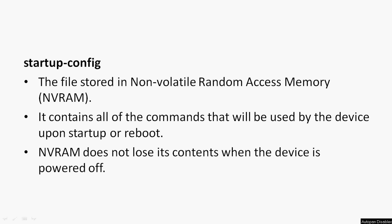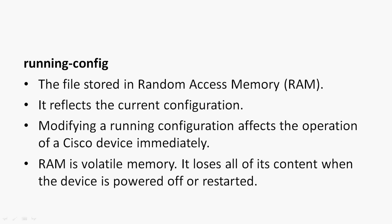That's why we call it NVRAM — non-volatile RAM. Coming to running config, the file stored in random access memory, i.e. RAM, is commonly called running config. It reflects the current configuration.